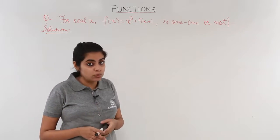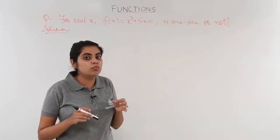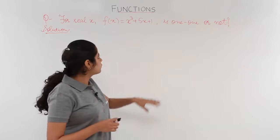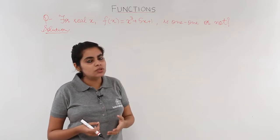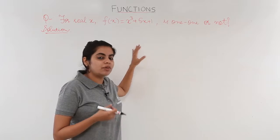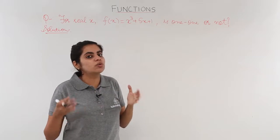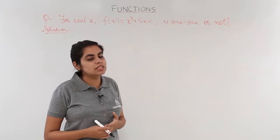Second method was using calculus, that is using monotonicity. If we see, this is an easy polynomial function, it can be easily derivable. So let's differentiate this function, find out the first derivative, follow the three steps and check whether it is one-to-one or not.